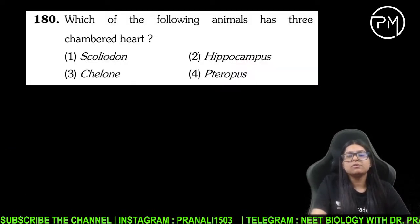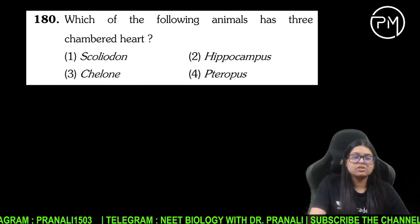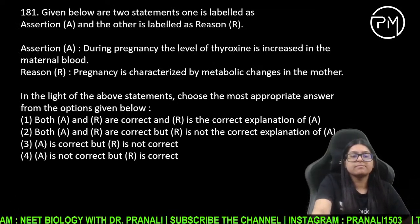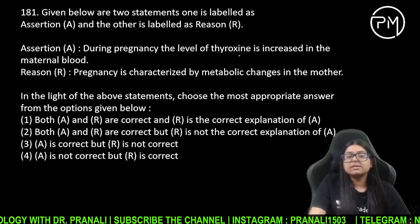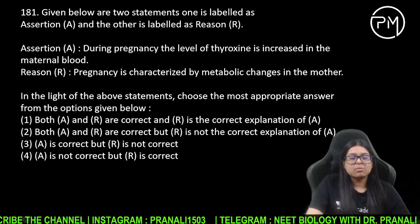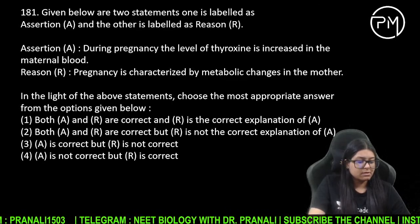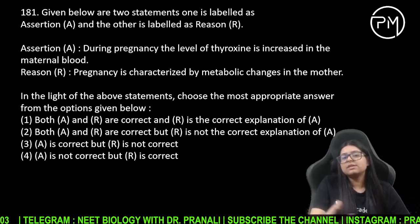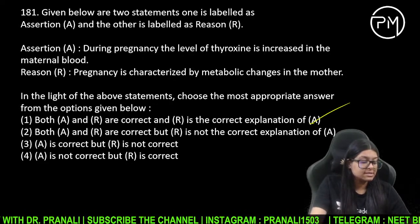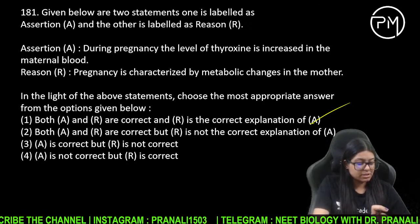3-chambered heart — Amphibia ke paas hai aur Reptiles ke paas hai — chelone, turtle. During pregnancy, thyroxine ka level increase ho jaata hai maternal blood mein — metabolic changes ho rahe hain kyunki mother mein. Sahi baat hai — thyroxine ka level badh raha hai.